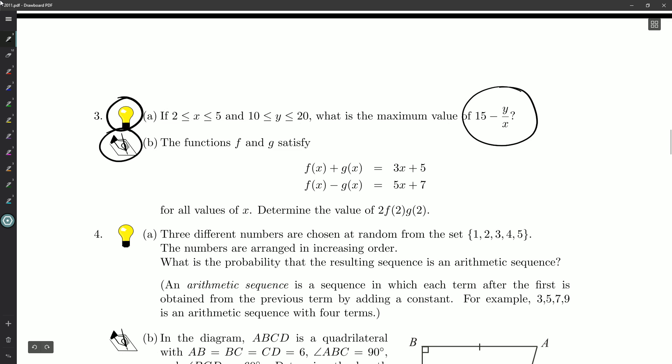Now what about the B part? The functions F and G satisfy, oh, we got some nice little equations. So F plus G is this nice line over here. F minus G is this other line, 5X plus 7. And this is true for all values of X, so that's going to be kind of important. Determine the value of 2 times F at 2, G at 2.